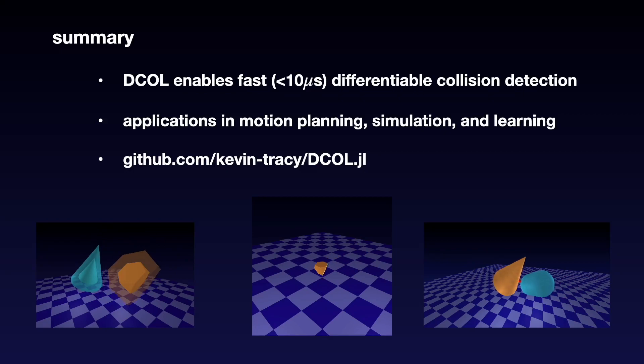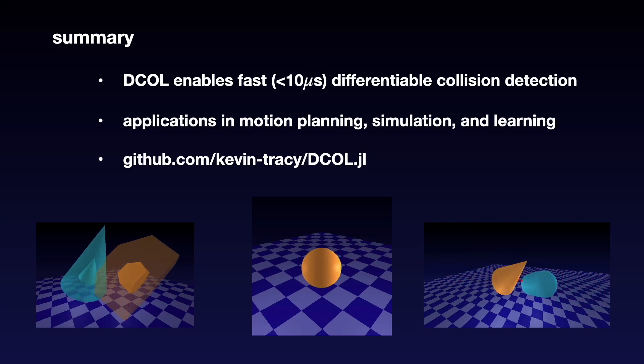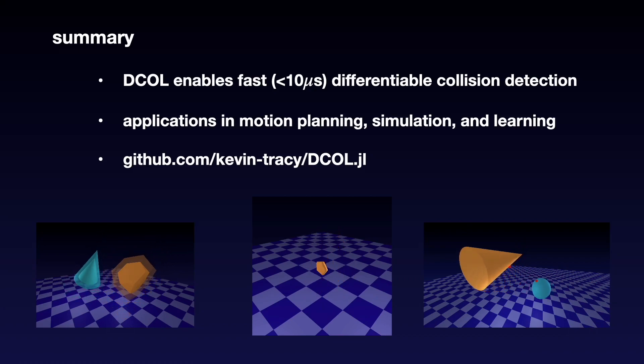In summary, DCOL enables fast, less than 10 microsecond, differentiable collision detection with applications in motion planning, simulation, and learning. Furthermore, an open-source implementation of DCOL is provided in the Julia language on GitHub.